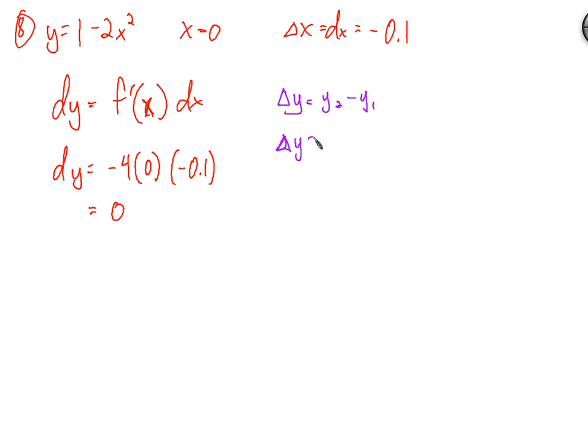So the actual delta y is just equal to y2 minus y1. So delta y is equal to y of negative 0.1 minus the original y value, which would be y of 0. So we have 1 minus 2 times negative 0.1 squared, minus 1 minus 0, or 1 minus 2 times 0 squared.